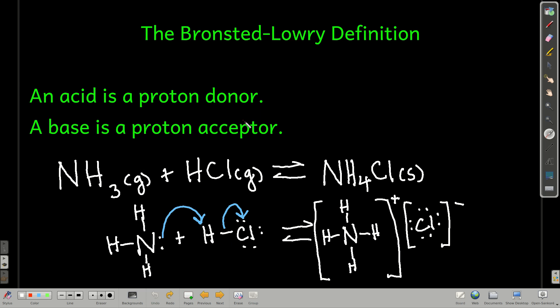So the Bronsted-Lowry definition extends to cases where the Arrhenius definition doesn't fit. In the Arrhenius definition, you have to have water around, and you have to have protons and hydroxide ions around. And things can be acids and bases in situations where that is not the case.